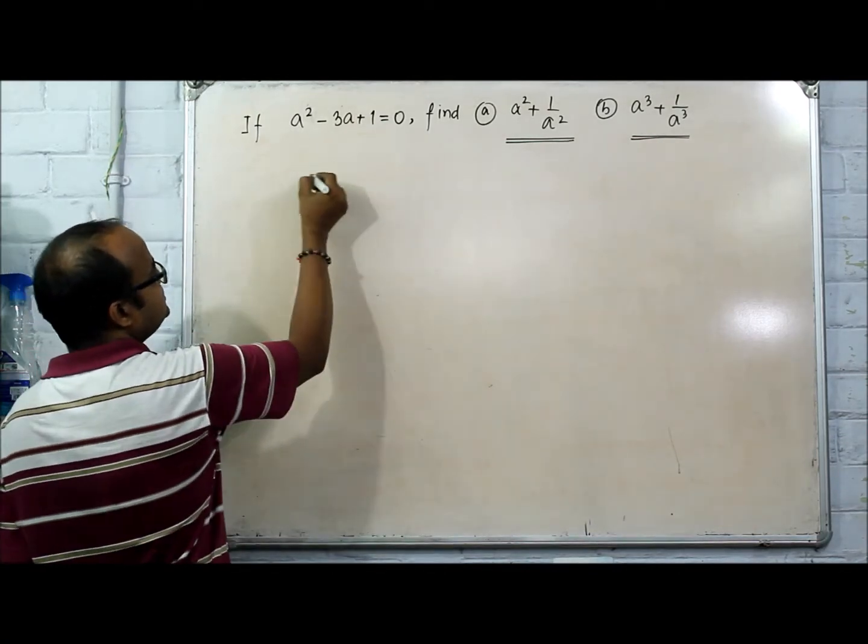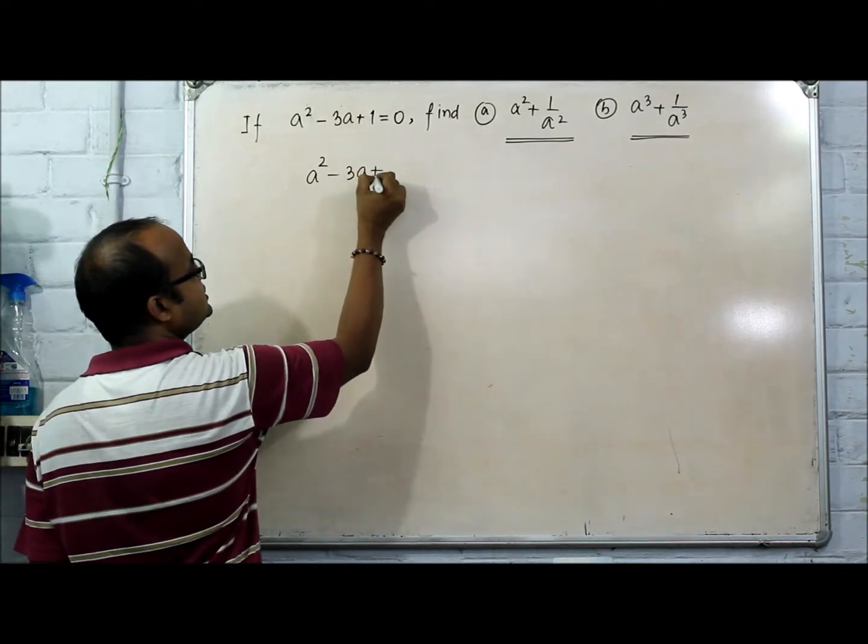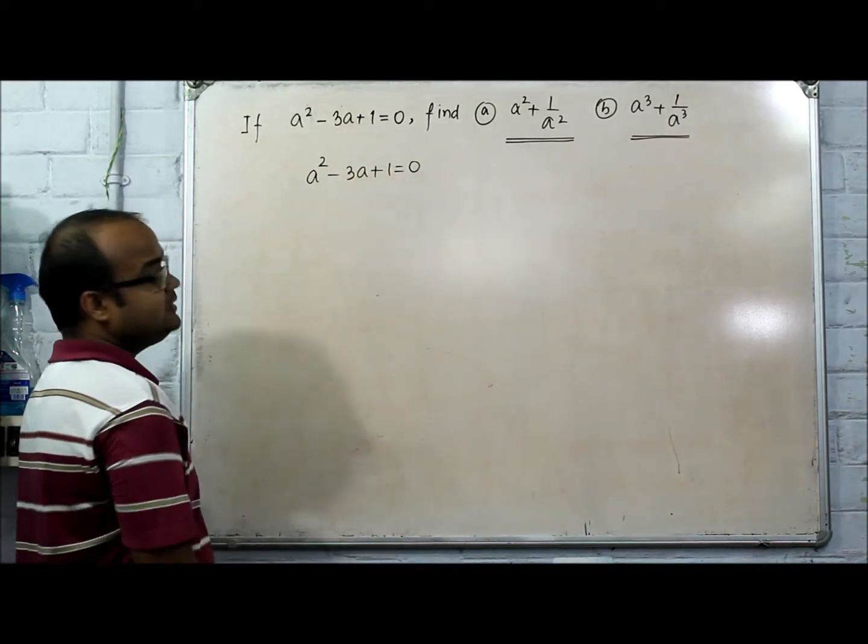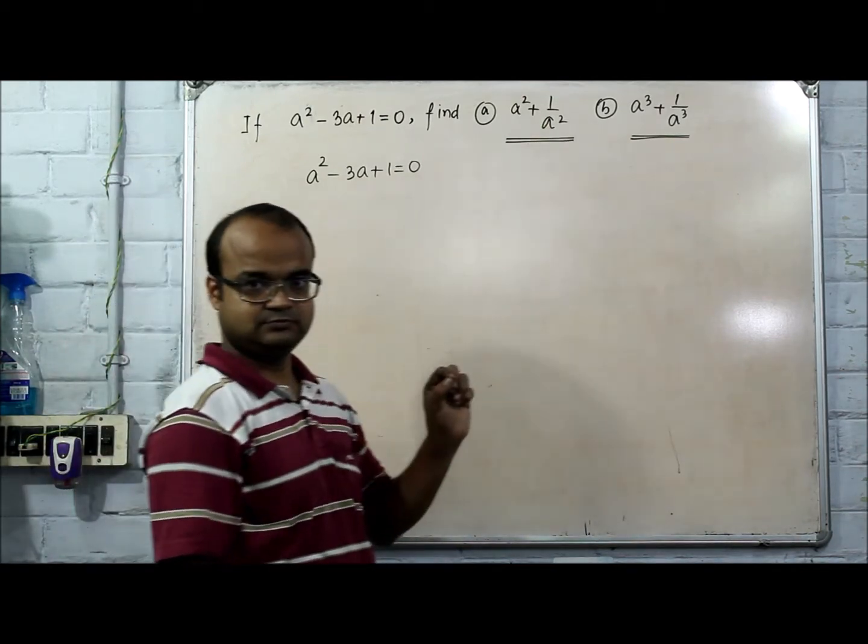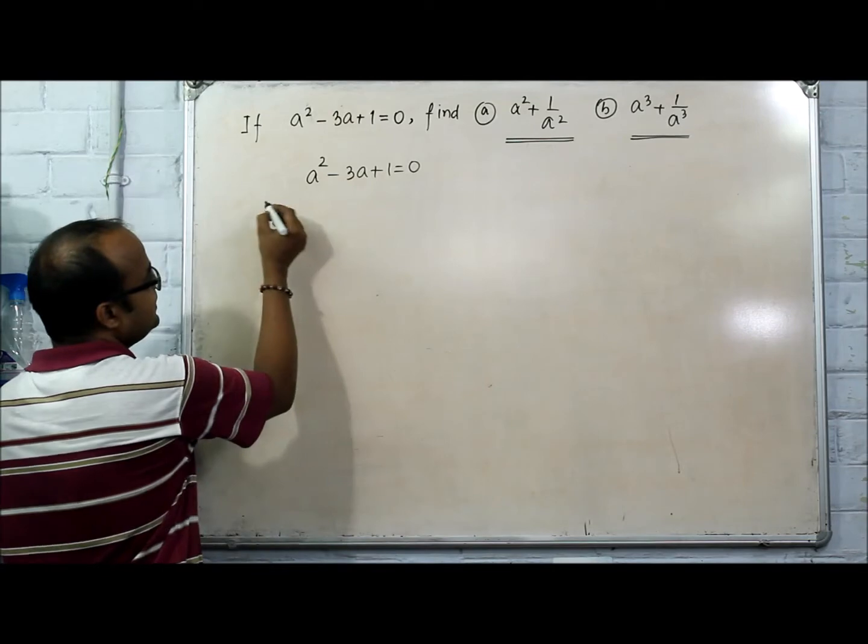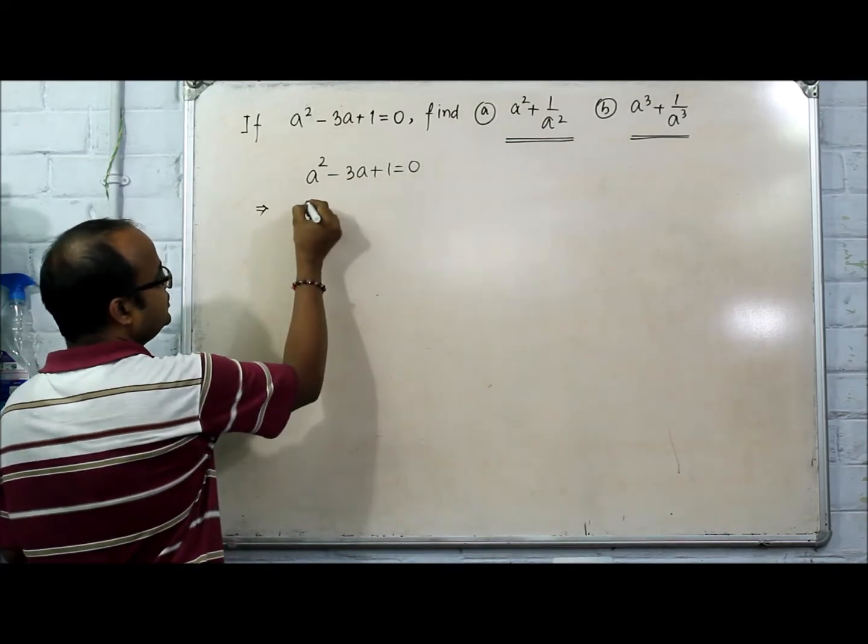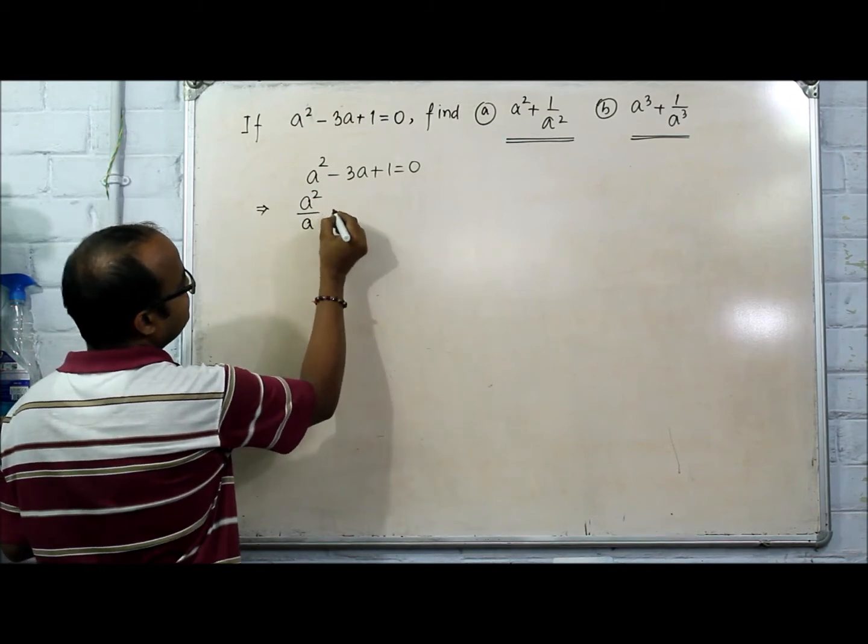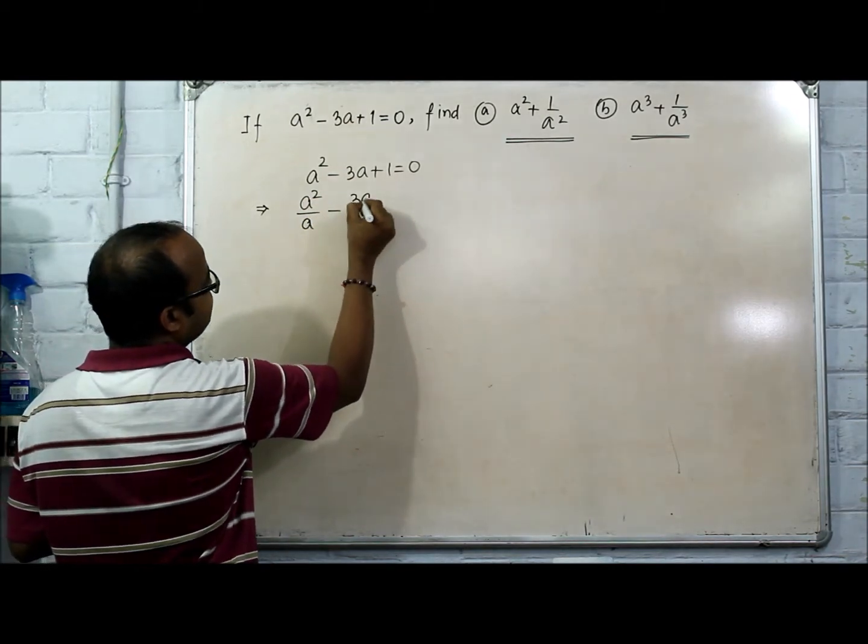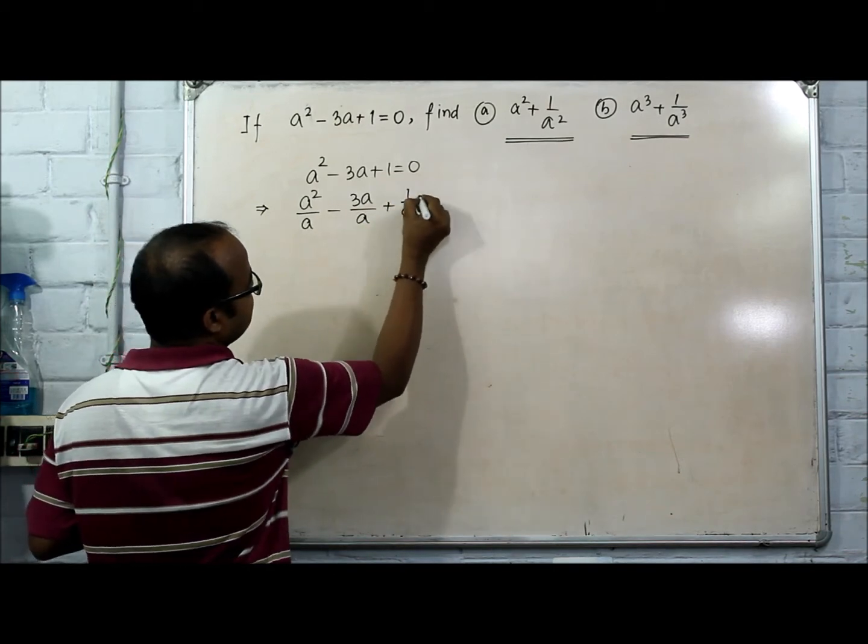So first, a² - 3a + 1 = 0. Now we need to bring the 1/a term. So divide both sides by a and apply term by term division. You get a²/a - 3a/a + 1/a = 0.